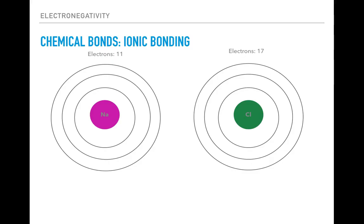Let's consider that we have two atoms: sodium and chloride. Sodium has 11 electrons, whereas chloride has 17. Some sources you may review differ slightly in the number of electrons said to fit on each of the electron shells or valences. For our purposes, let's consider that the first shell can only accept two electrons, which is true across the board regardless of the source you reference, but each subsequent shell can only house up to eight electrons.